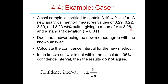The question is whether 3.26 agrees with the known value of 3.19 — can that difference be explained by random error? We calculate the confidence interval for n=4 measurements: T at three degrees of freedom and 95% confidence is 3.182 from the table. The confidence interval is 3.182 × 0.041 / √4 = ±0.065.